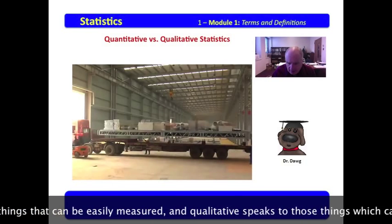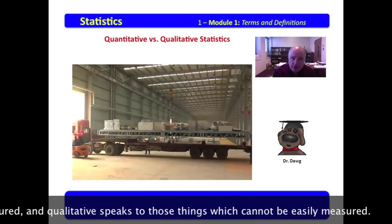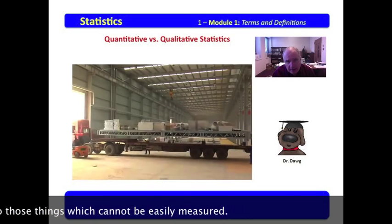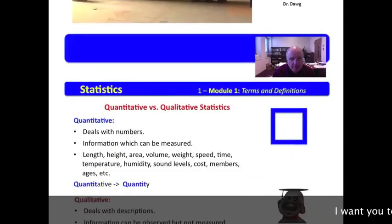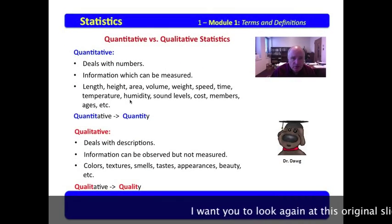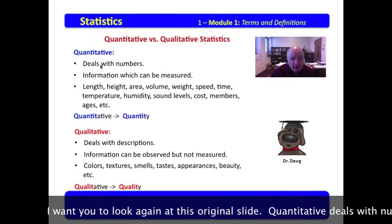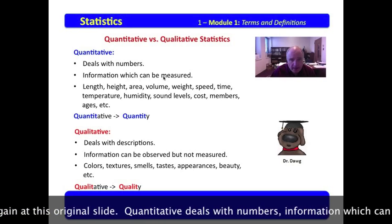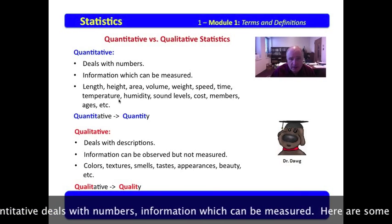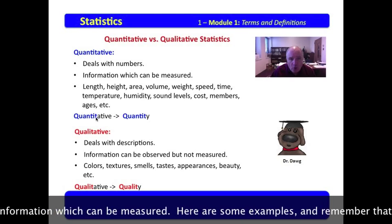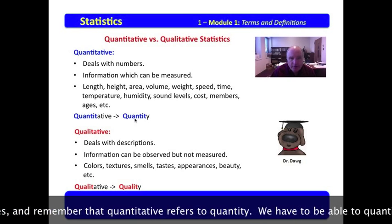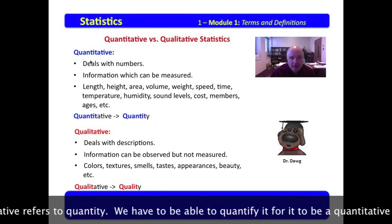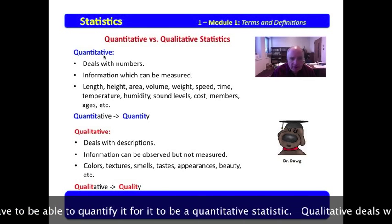So, quantitative speaks to things that can be easily measured, and qualitative speaks to those things which cannot be easily measured. I want you to look again at this original slide. Quantitative deals with numbers, information which can be measured. Here are some examples. And remember that quantitative refers to quantity. We have to be able to quantify it for it to be a quantitative statistic.